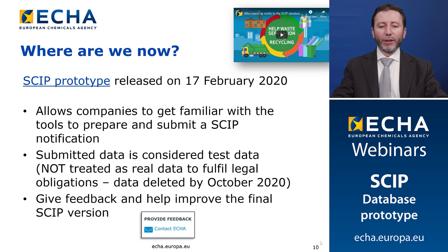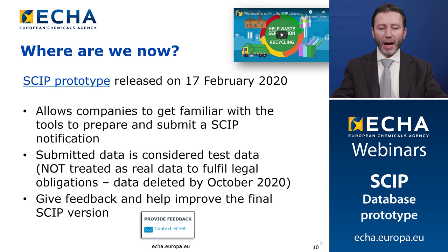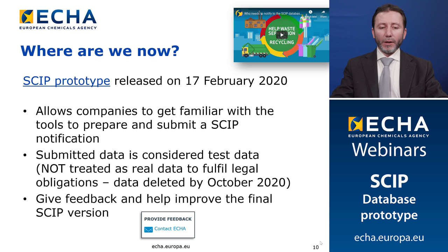Now, where are we in the development of the SCIP database? The SCIP prototype was released on the 17th of February 2020. This prototype allows companies to get familiar with the tools to prepare and submit the SCIP notification. You can now test the submission tools and the tools to prepare your notification. We invite you to use the SCIP prototype and then provide feedback to help us improve the final SCIP version. Please note that data submitted through the SCIP prototype will be considered test data and will be deleted before the October 2020 final release.